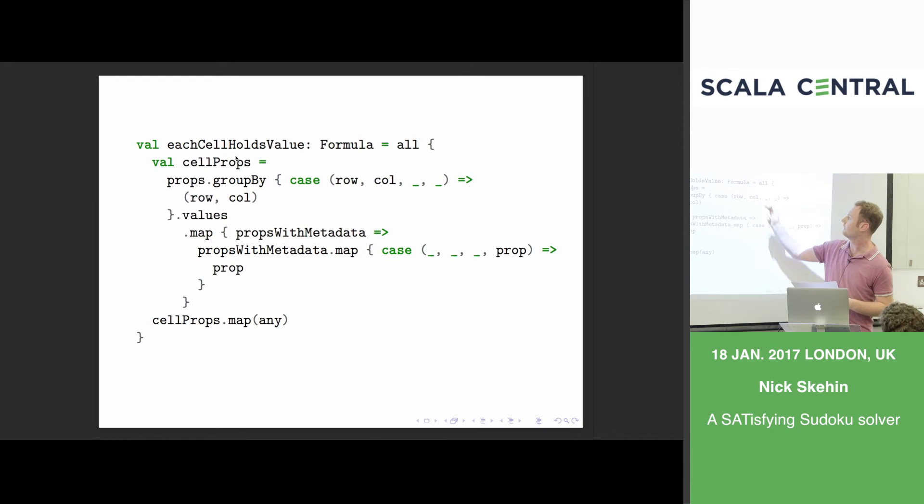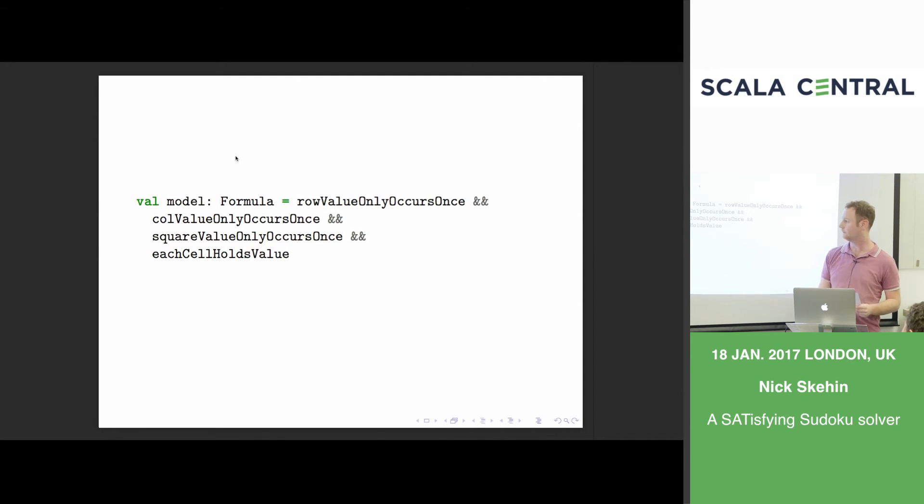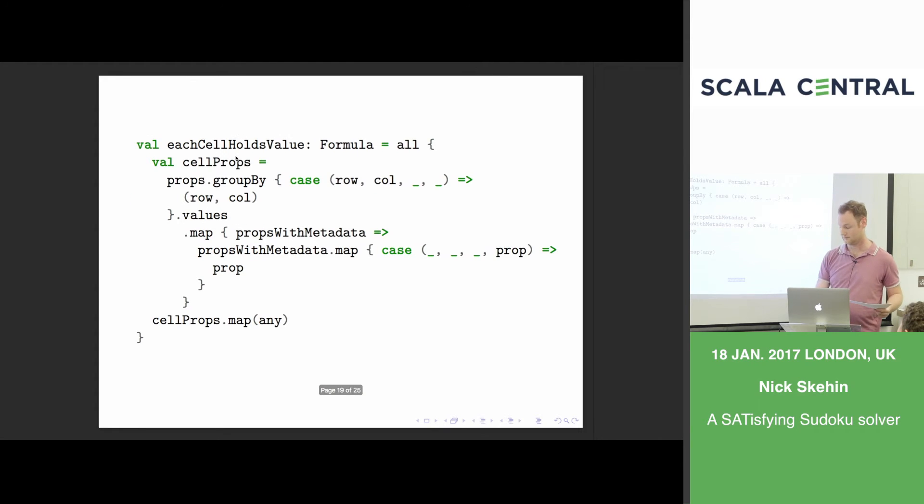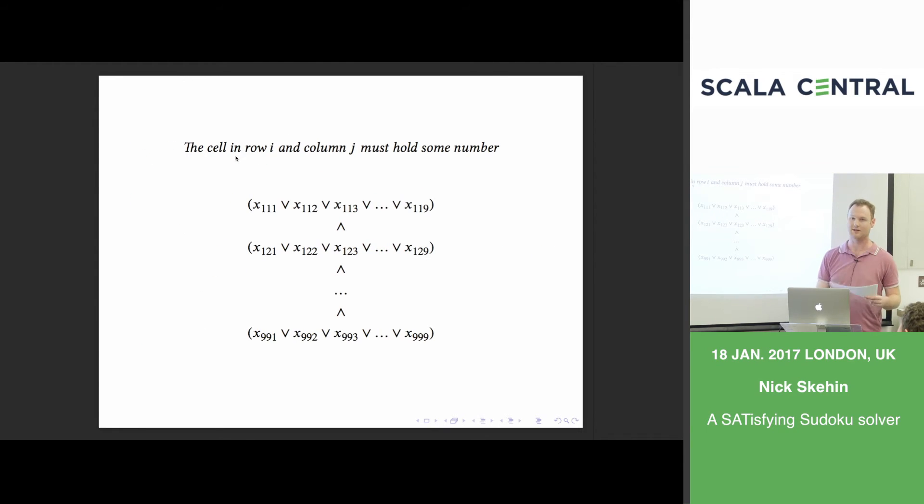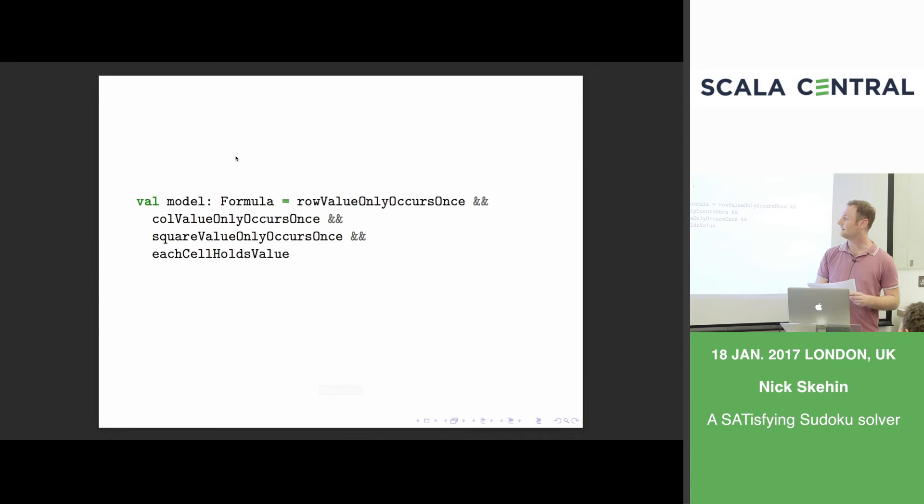And that one looks a bit like this. So we're saying here, we're just selecting all the values for a given cell. And then we're saying one of them must be true, at least one of them. And then we're saying that for all cells, they must hold a value. So this is our model. We just take all of our constraints and we say they must all be true. And it's just a formula. This is not doing any magic. It's just building up a really big, complicated expression in memory. And it's really big. With this library, you can't actually print it because it's got too many variables.